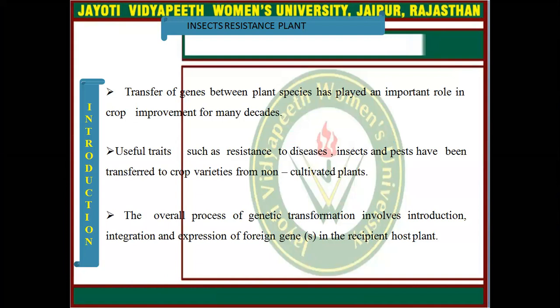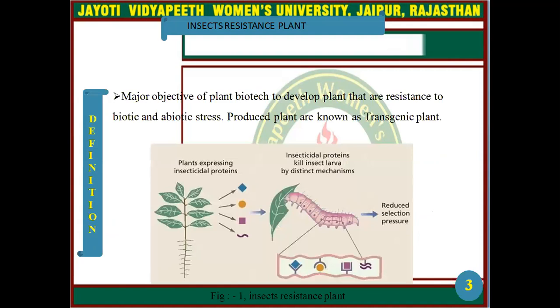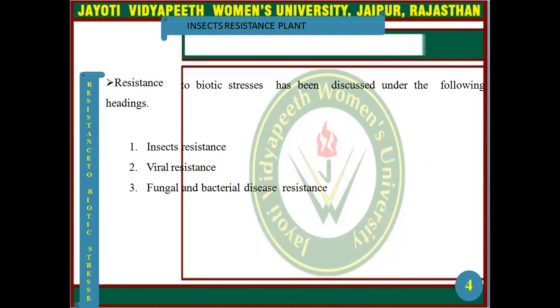The overall process of genetic transformation involves introduction, integration, and expression of foreign genes in the recipient host plant. A major objective of plant biotechnology is to develop plants that are resistant to biotic and abiotic stress. Plants produced through this process are known as transgenic plants.